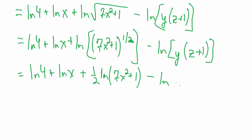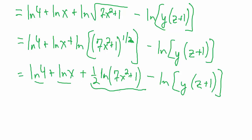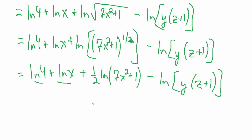Natural log of 4, natural log of x, and 1/2 times natural log of (7x squared plus 1) cannot be simplified further. It might be tempting to try, but the 7 and the plus 1 prevent applying the power rule to x squared alone, and the plus 1 also prevents splitting 7x squared plus 1 using another product rule. So there's nothing more we can do to simplify those terms.